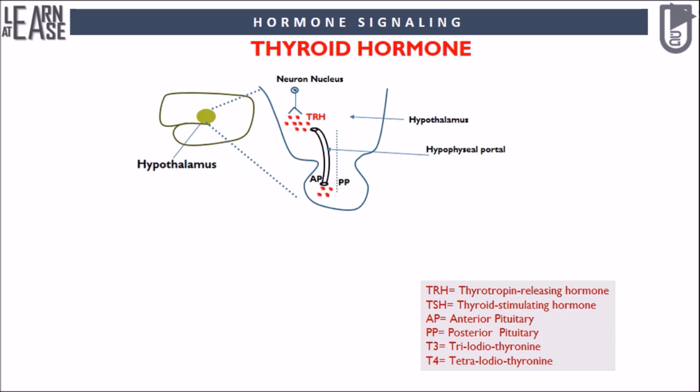The anterior pituitary has special type of endocrine cells known as thyrotrope cells, which detect TRH and get activated. The activated thyrotrope cells produce a glycoprotein molecule known as thyroid stimulating hormone, abbreviated as TSH. TSH produced by thyrotrope cells is then poured into the blood.